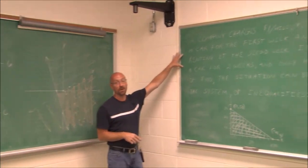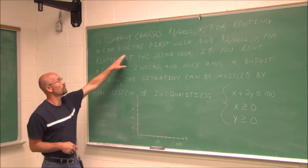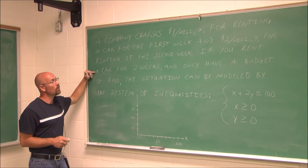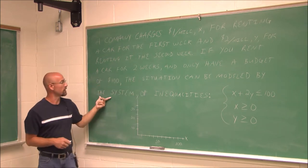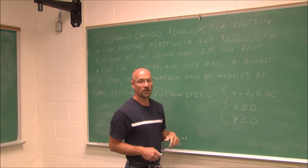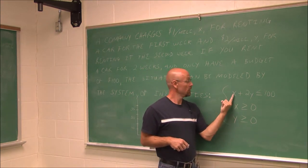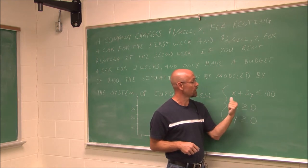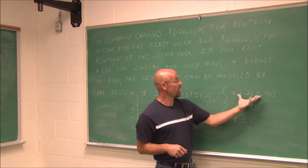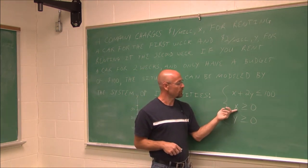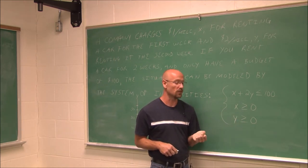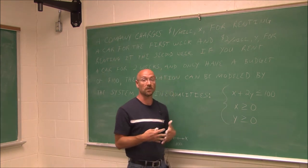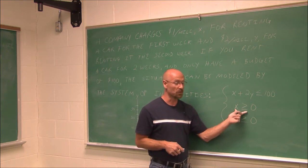Now we're going to look at an application problem. A company charges $1 per mile, x, for renting a car for the first week, and $2 per mile, y, for renting it the second week. If you rent a car for two weeks and only have a budget of $100, the situation can be modeled by the system of inequalities: x plus 2y is less than or equal to 100. Here, x is the number of miles during the first week at $1 per mile, and y is the second week at $2 per mile. We also have x is greater than or equal to 0 and y is greater than or equal to 0, because we're not going to have any negative values of distance.